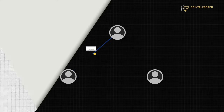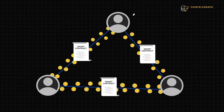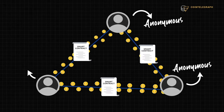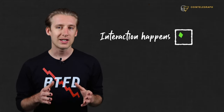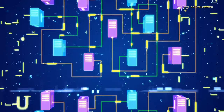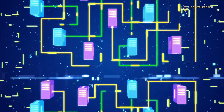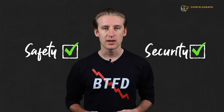Trustless. If you want to interact with someone else through a smart contract, you don't have to know who they are. You don't even have to trust them, because you know that the code and the blockchain technology ensures that the interaction happens and is accurate. Transparent. You can see the code for the smart contracts. If the blockchain is public, then the contracts will be too. This makes it much easier to check the safety and security of the contract.